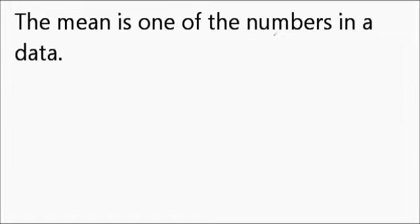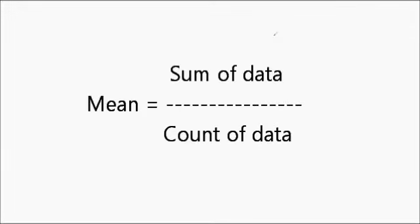Statement 2, the mean is one of the numbers in the data. Now what is the definition of mean? Definition of mean is sum of the observations divided by the count of the observations. Now we are nowhere talking about any individual observation here. We are combining them. We are making a sum of them and dividing by the count. Very frequently we will get some fraction number. Number which is not exactly in the data set. And hence this statement is false. The mean is not always one of the numbers in the data.